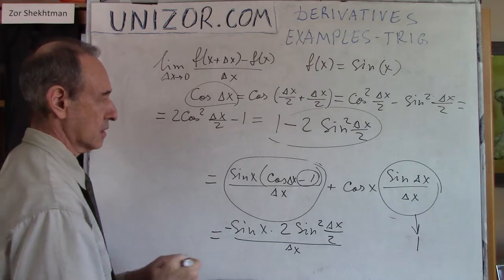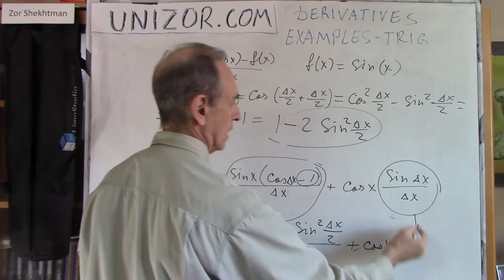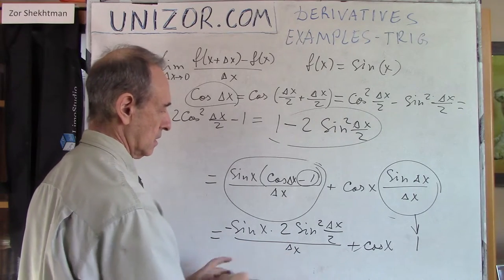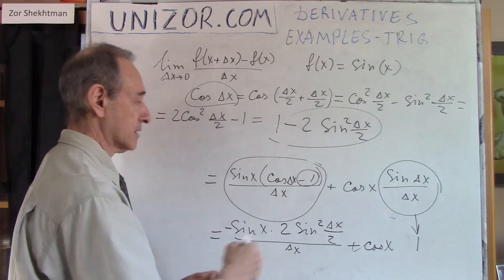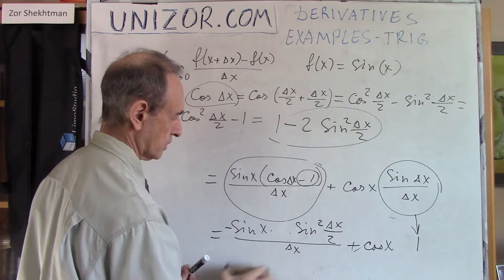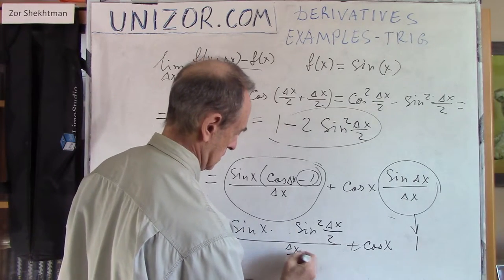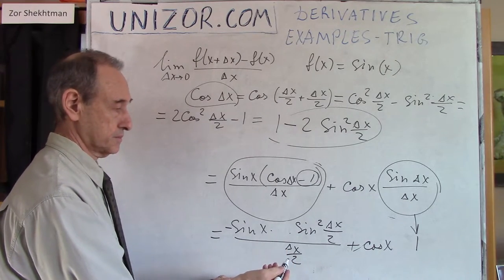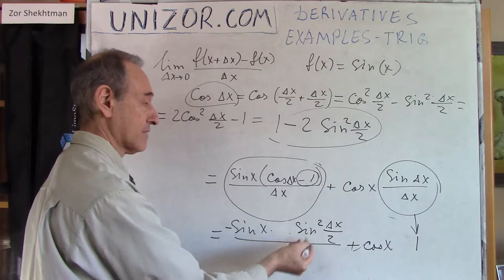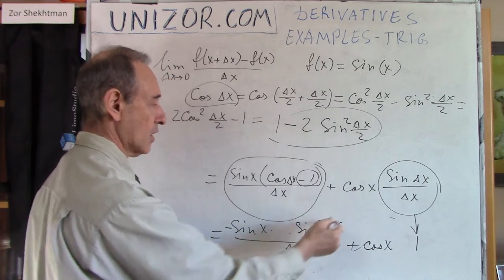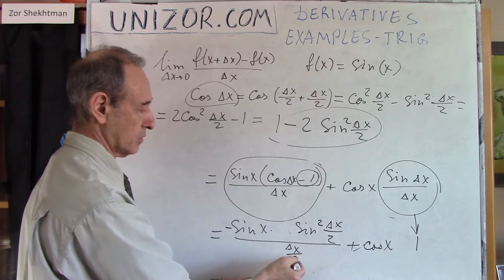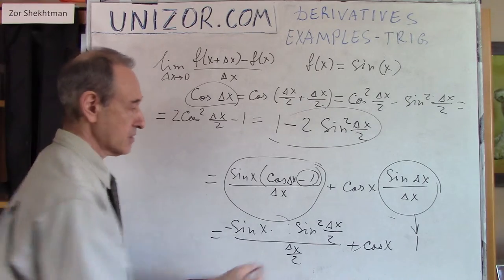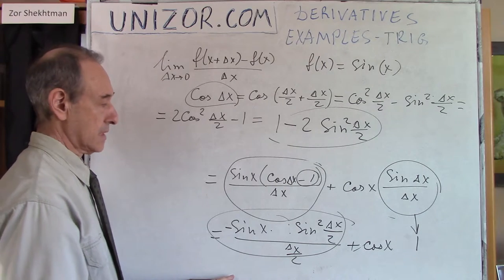And here we see plus cosine x, and I will not really write this anymore because I know that it will go to one anyway. I know that sine of delta x over two divided by delta x over two goes to one if delta x goes to zero. But I have sine squared, which means sine times sine. So one sine of delta x over two and delta x over two will go to one, but another sine will drag it to zero because delta x goes to zero. So the whole thing actually will go to zero as delta x goes to zero.